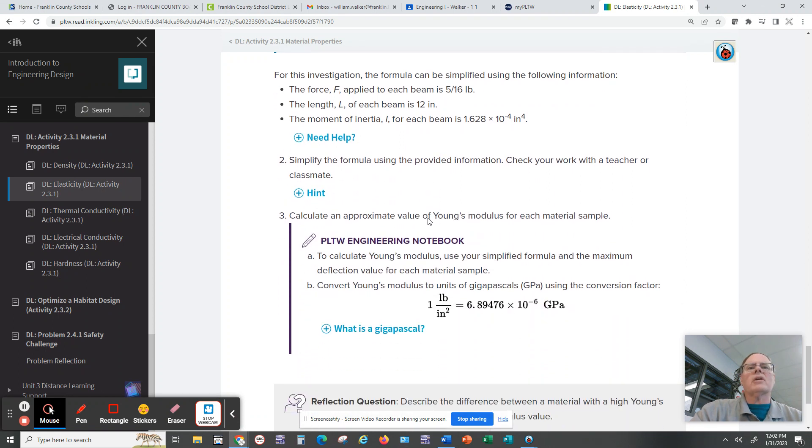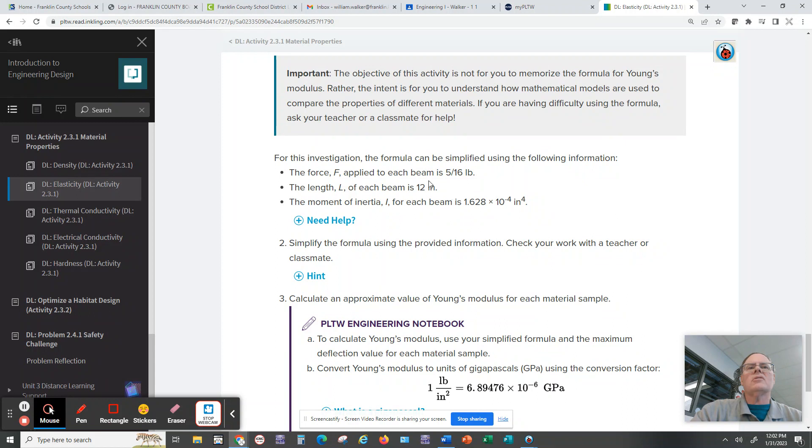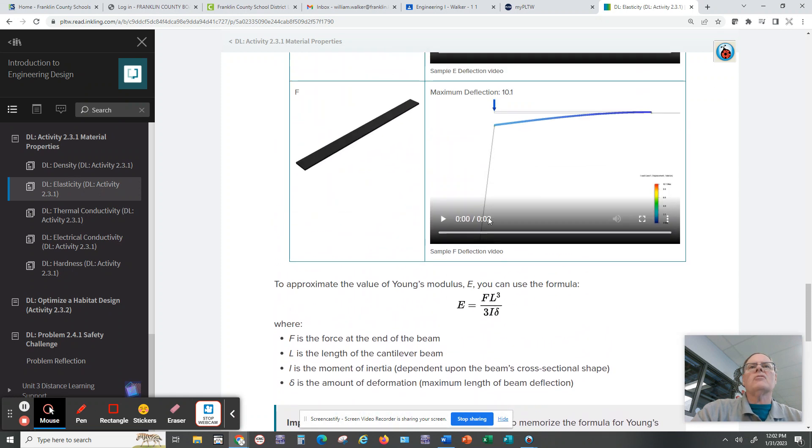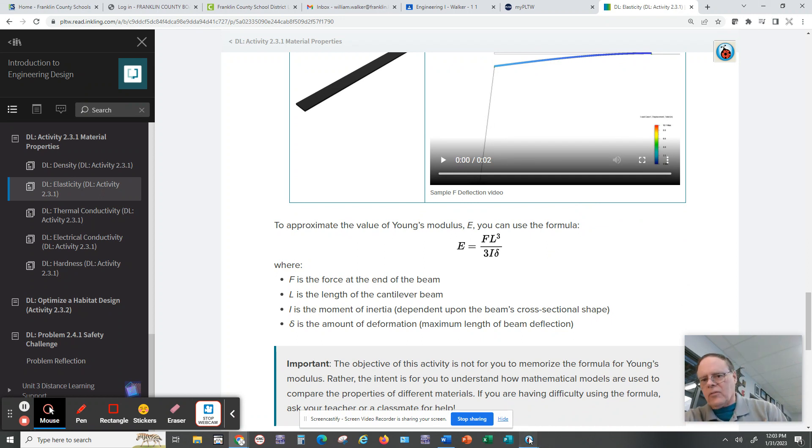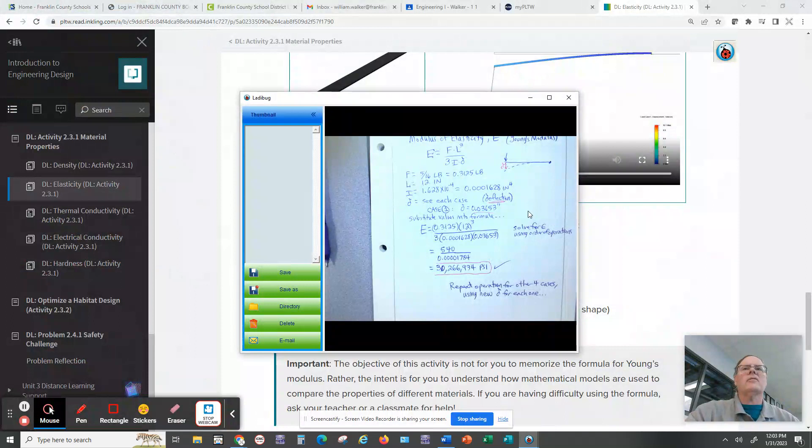Then we're going to actually plug this into each case. We're going to plug these numbers F, L, and I into the formula, and then we're going to use the delta or the deflection in each of the six cases. So you're going to end up doing this calculation six times plugging into the formula. Let's look at an example of how we would do this.